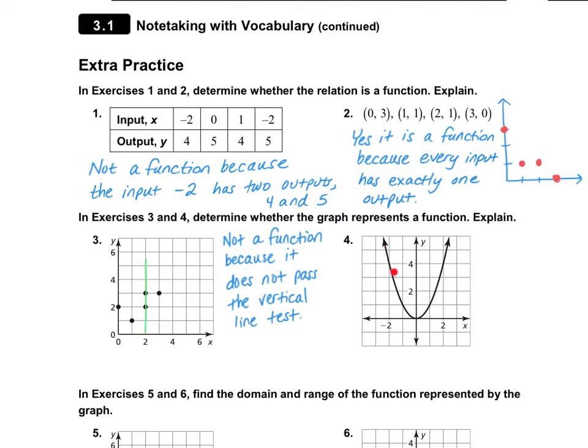In number four, I have this nice U shape here that has the name of a quadratic. We'll be doing a lot with quadratics later this year. So can I put a vertical line anywhere where it's going to cross that U shape more than once? And the answer is no. So it actually does pass the vertical line test. So number four is a function.